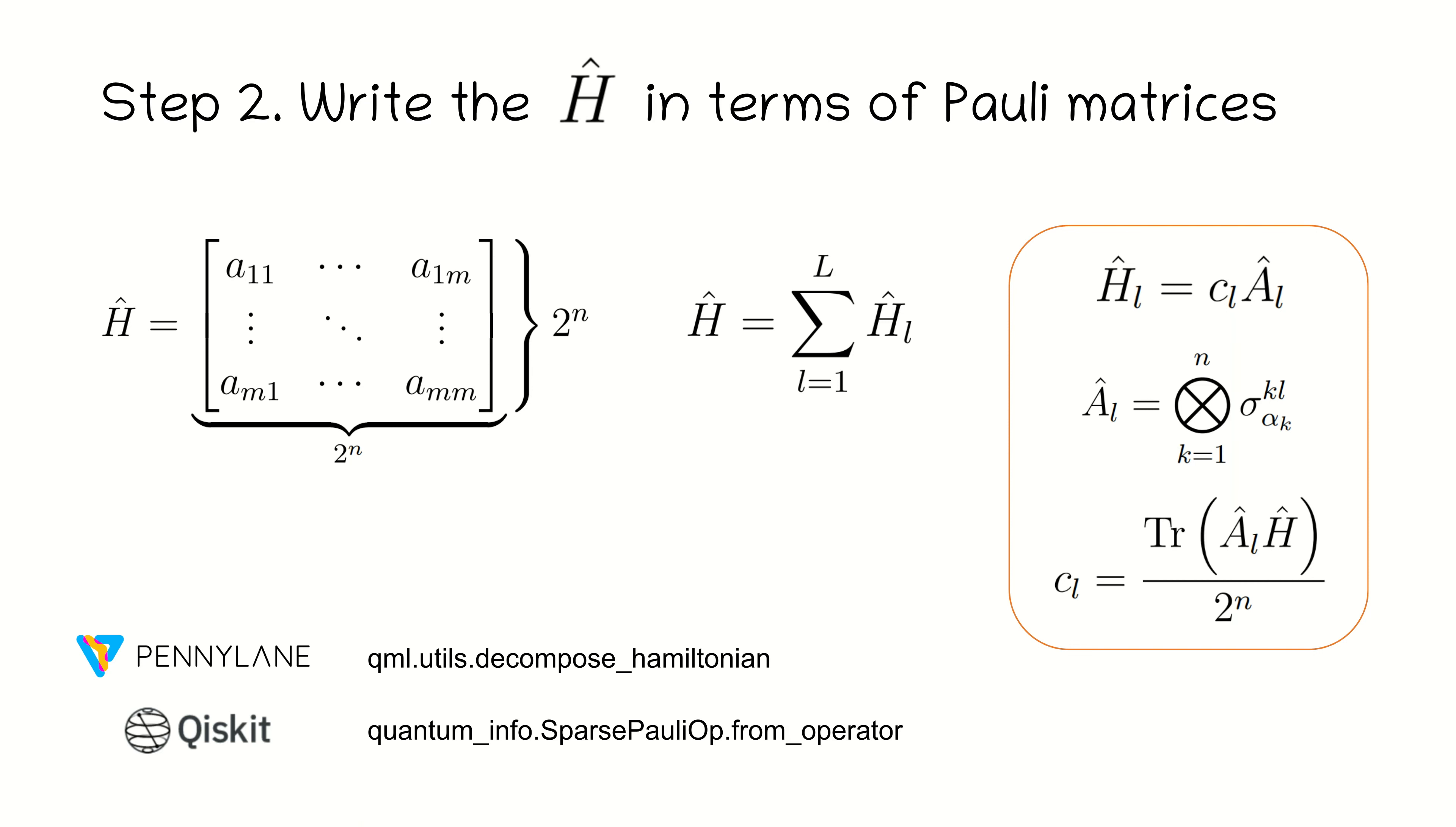Sometimes, local Hamiltonians get mapped into non-local ones, for example when Jordan-Wigner transformation is applied.